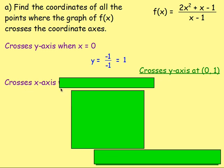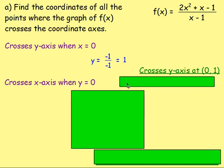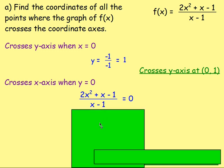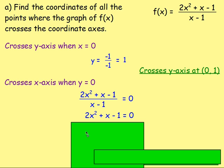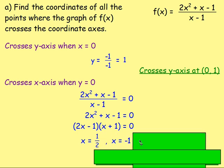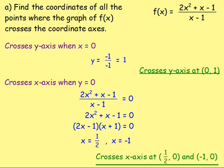For the x-axis crossing, that's when y equals zero. Setting the fraction equal to zero and multiplying both sides by x take away 1 gives 2x squared plus x take away 1 equals 0. Factorising: (2x − 1)(x + 1) = 0, giving x equals a half and x equals negative one. Therefore the graph crosses the x-axis at (1/2, 0) and (−1, 0).